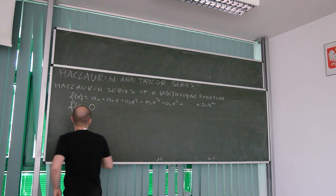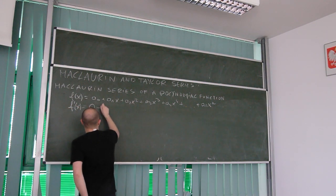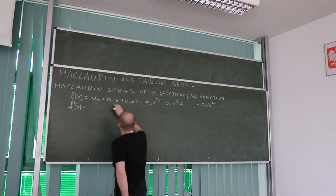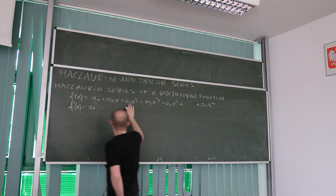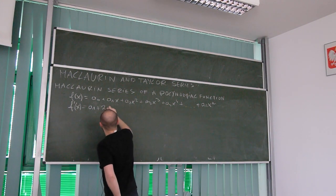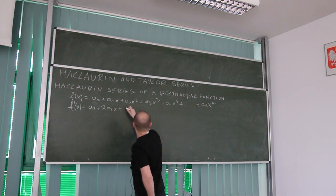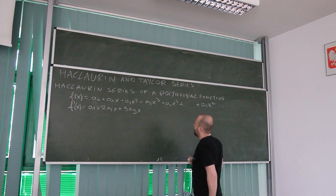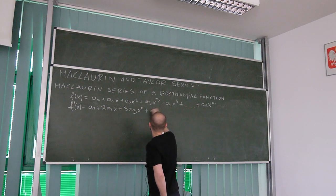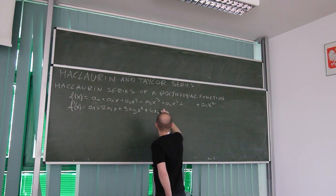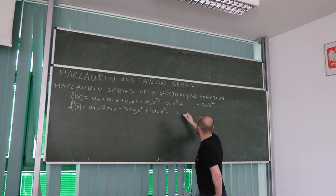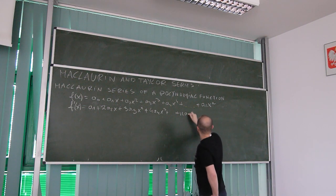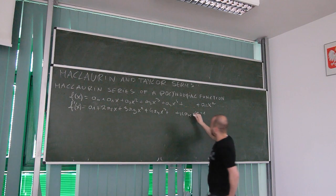The first derivative gives us: a₁ plus 2a₂x plus 3a₃x² plus 4a₄x³, and we go on like this until the last component, which is n·aₙxⁿ⁻¹.